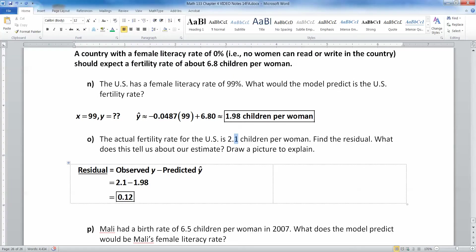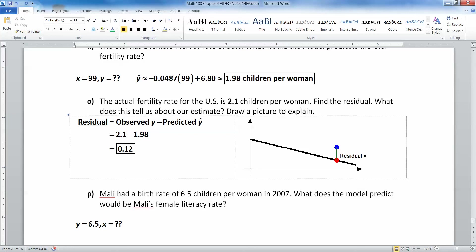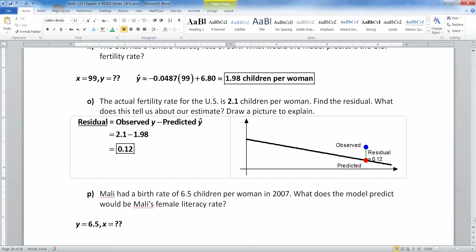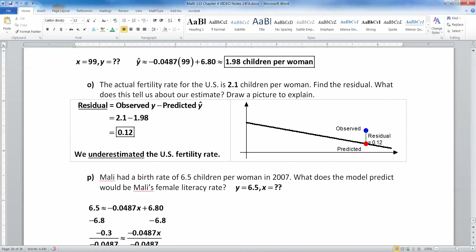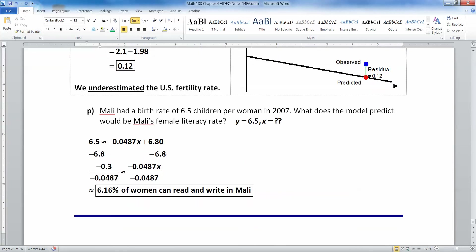Alright, what we observed was 2.1 right here. What we predicted was 1.98, so when you subtract them, you get a residual of 0.12. And here I drew you a picture right here so you could see what it looks like. So you can see observed is what we saw in real life, 2.1, and what we thought it would be was 1.98, and the distance between the two is 0.12. This means that we underestimated the U.S. fertility rate. We thought it would be lower than it actually was. So women in the U.S. have a little bit more children than we expect.